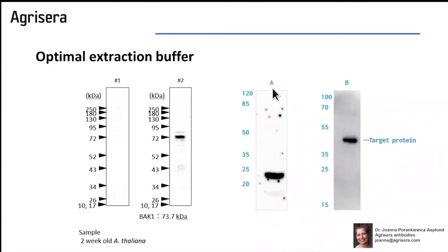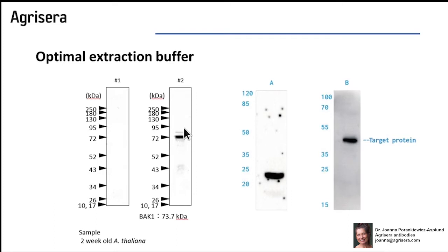Optimal extraction buffer can result in very different western blot results. Here you can see two examples where the extraction buffer has been adjusted between sample 1 and 2, and the target band in the applied extraction buffer in a second experiment showed detection of the target protein.